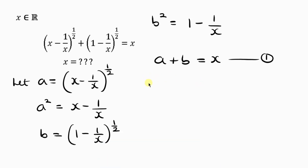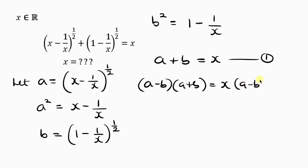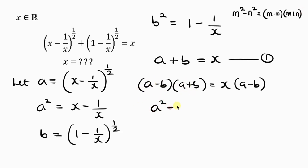I'm multiplying the left hand side by a minus b, so I write a minus b times a plus b, and doing the same to the right hand side — x times a minus b. Now notice this expression is a difference of two squares. Difference of two squares means m squared minus n squared equals m minus n times m plus n. So this becomes a squared minus b squared equal to x times a minus b.